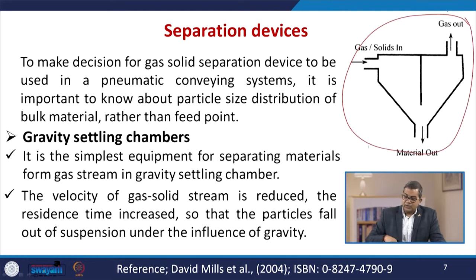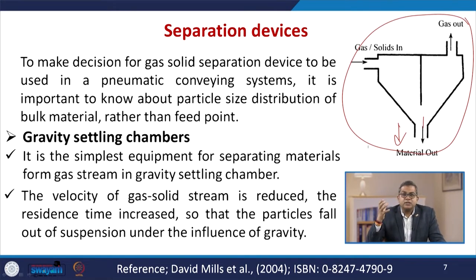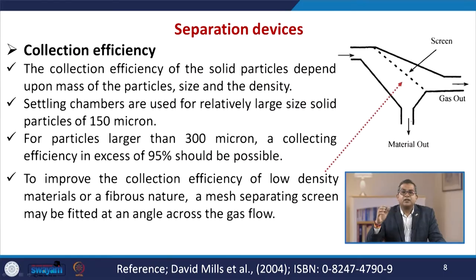In the gravity settling chamber, the gas and solids enter and the gas comes out, while you can draw the material from the bottom of the system. The velocity of the gas-solid system is usually reduced and the residence time is increased so that the particles fall out of suspension under the influence of gravity. The collection efficiency of the solid particles depends on the mass, size, and density of the particles. Settling chambers are used for relatively large size solid particles of around 150 microns. For particles larger than 300 microns, a collecting efficiency in excess of 95% should be possible. To improve the collection efficiency of low density or fibrous material, a mesh separating screen may be fitted at an angle across the gas flow.